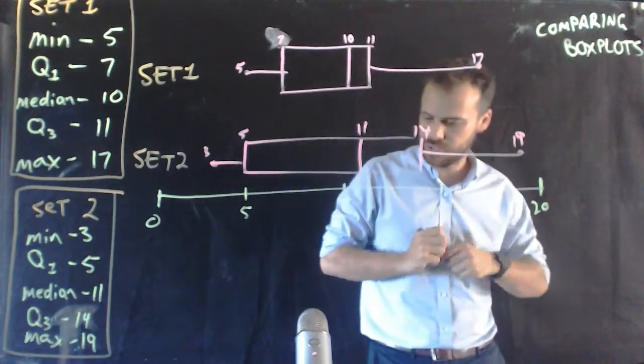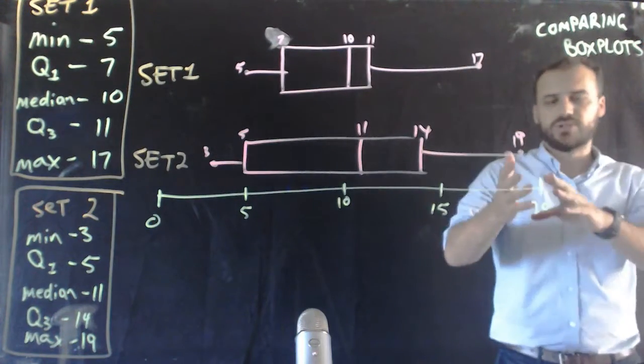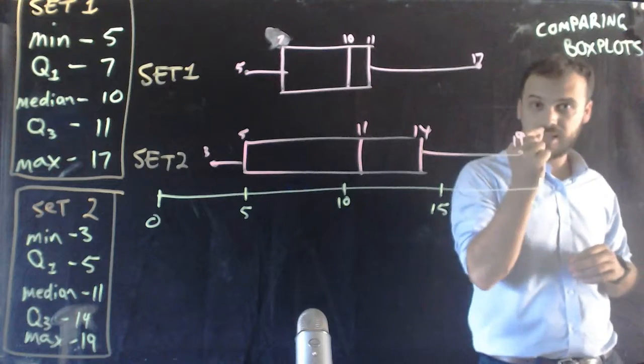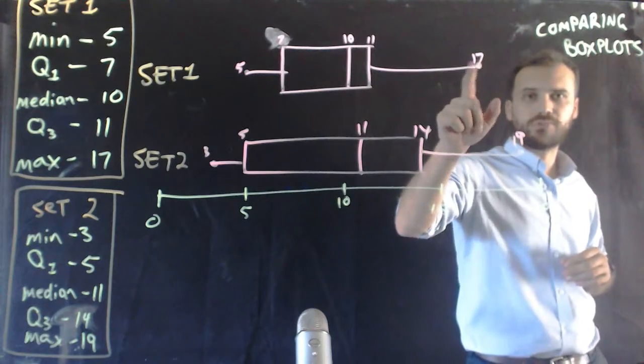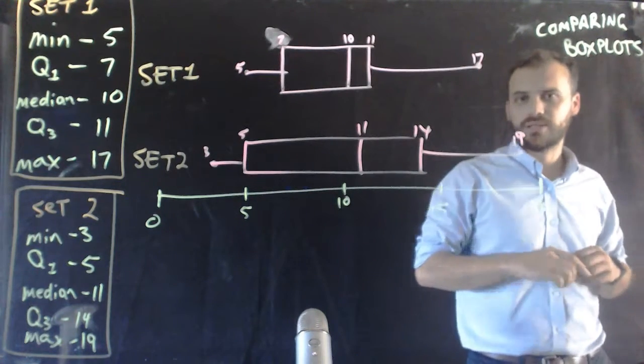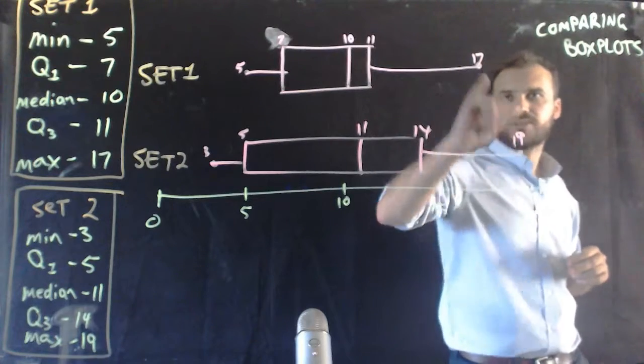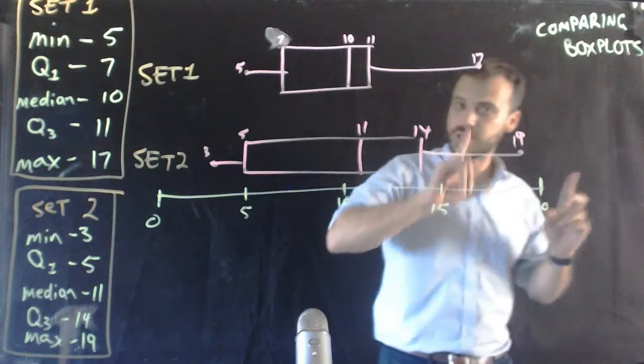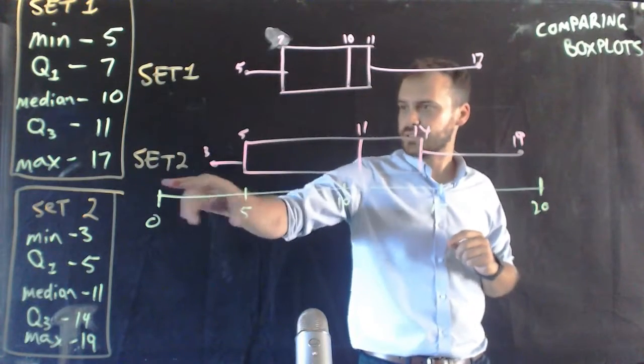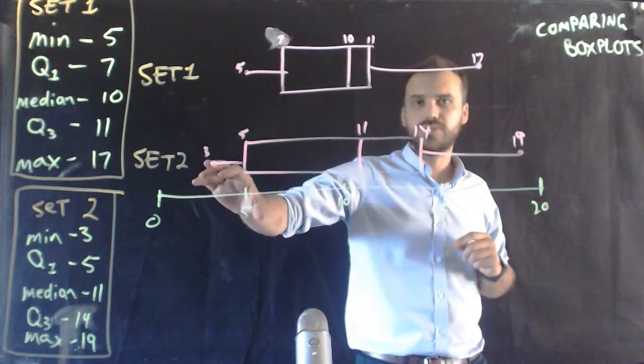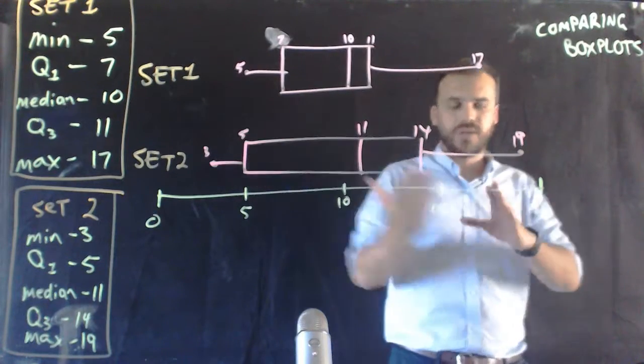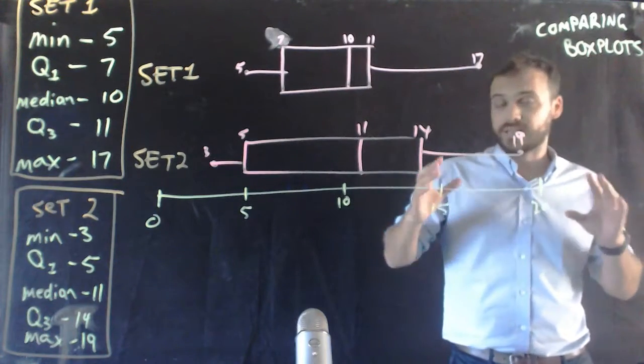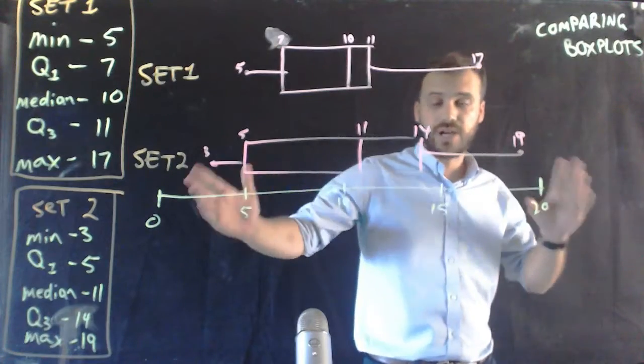We can say that class two had an individual student that obviously performed better than set one. The best student got 19, the best student got 17 in set one versus set two. We could also say, though, that in that class, the lowest student was lower than in this class. We could also say that set two has a greater range.